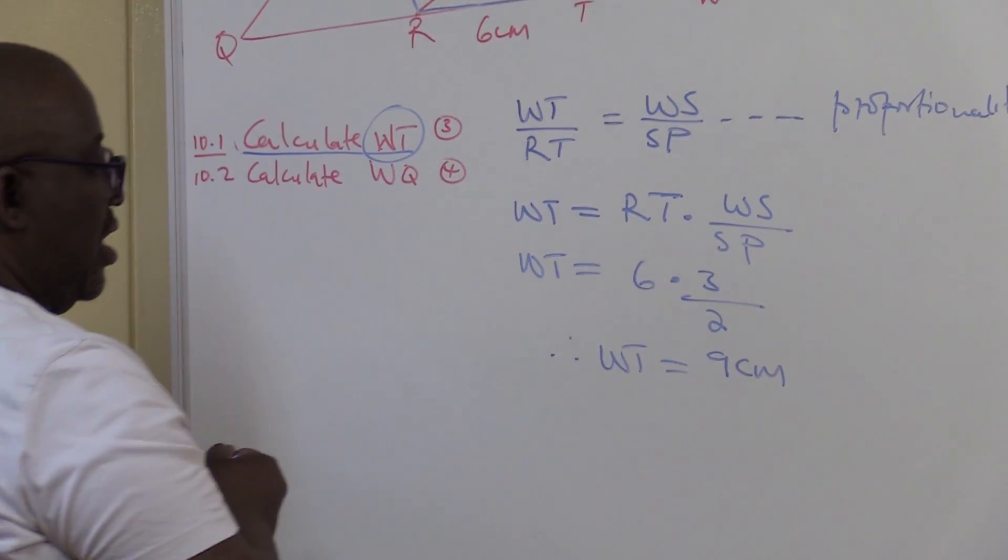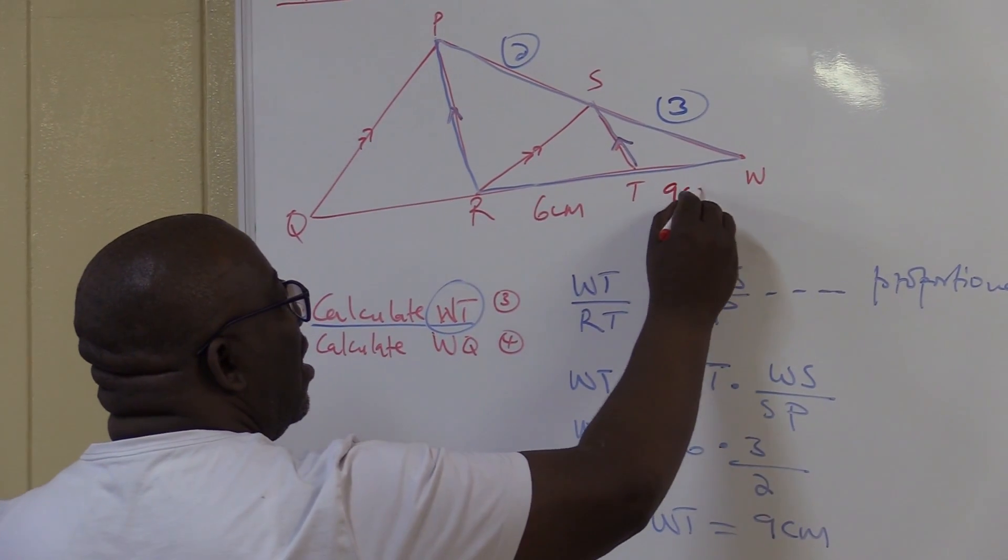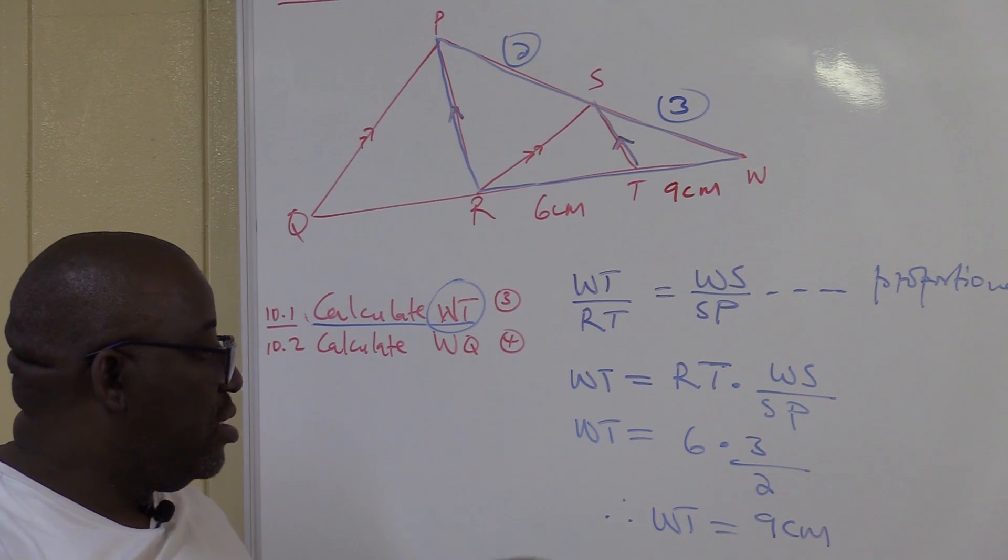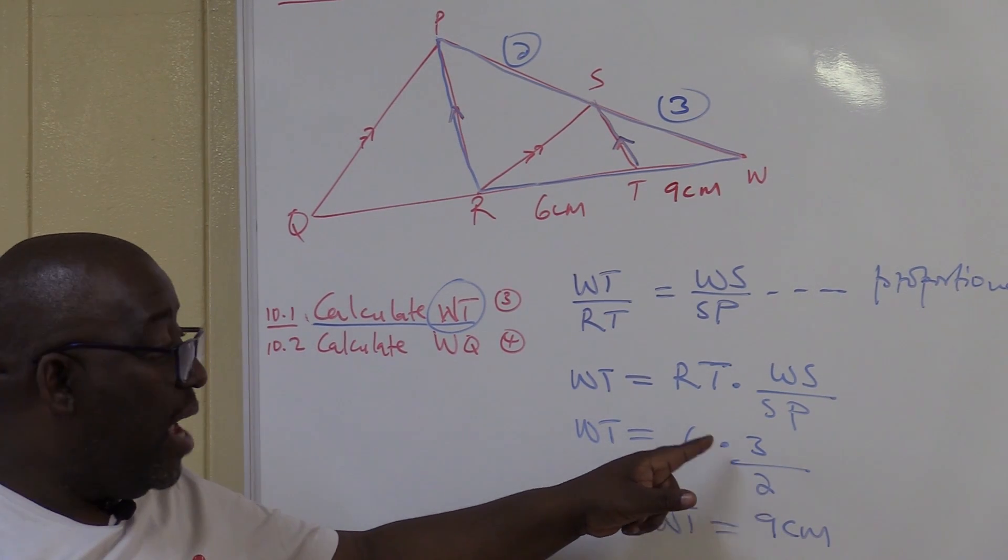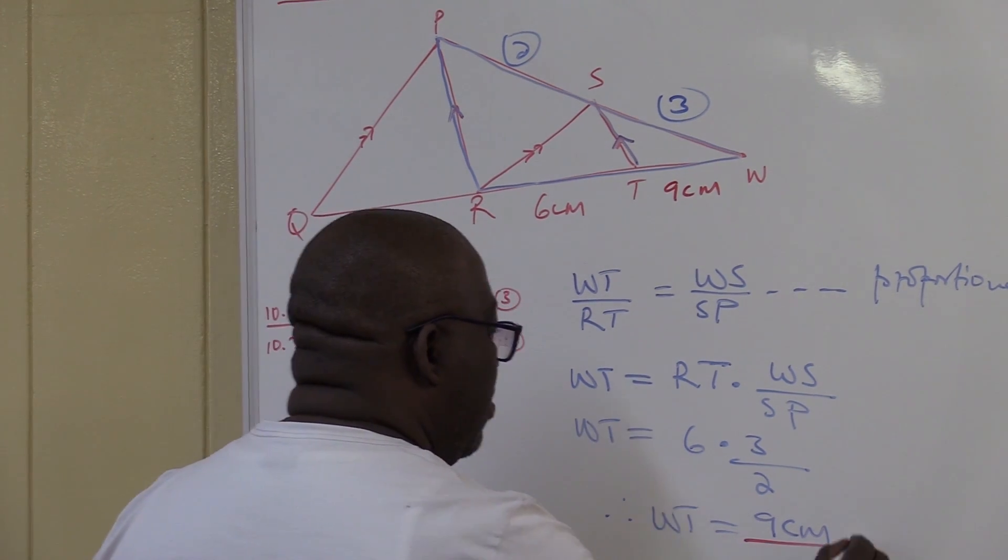That becomes important. WT is 9 centimeters. That's how you go about finding this. 6 times 3 is 18, 18 divided by 2 is 9. So we're correct. That's how we go about finding WT.